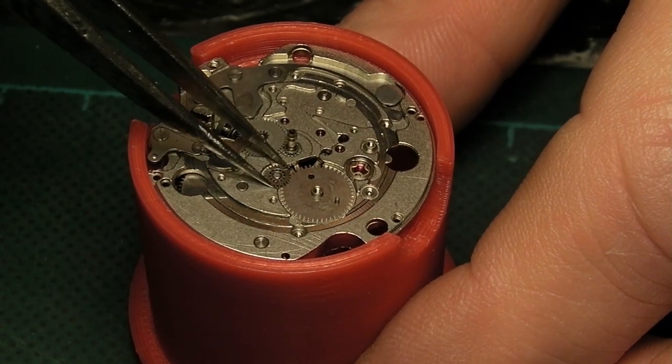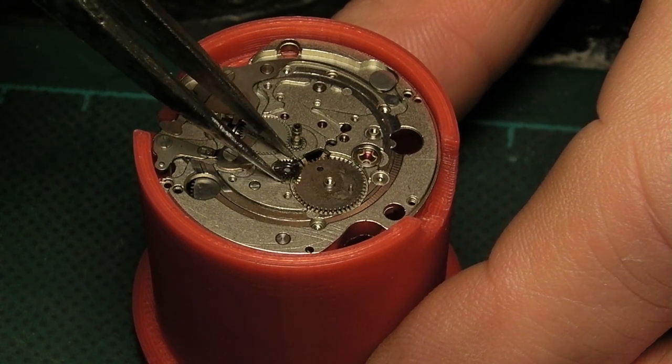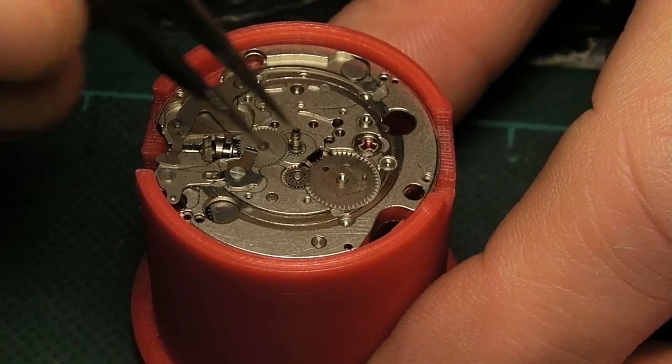There's the intermediate wheel for the date advance which is driven from the hour wheel.